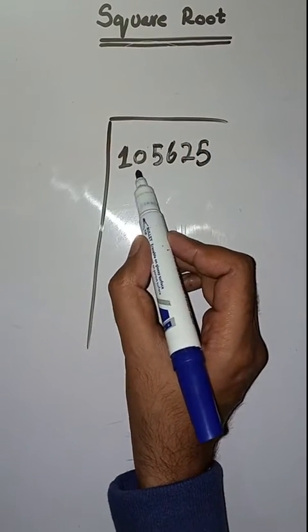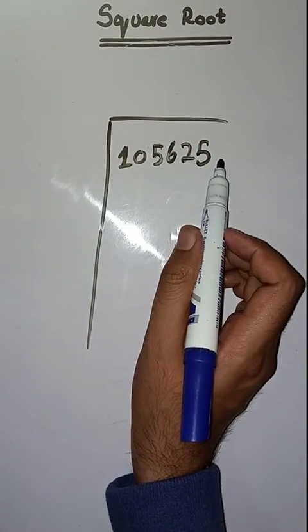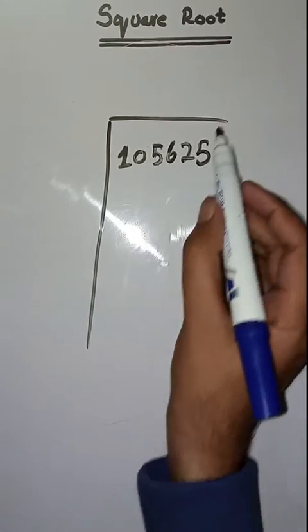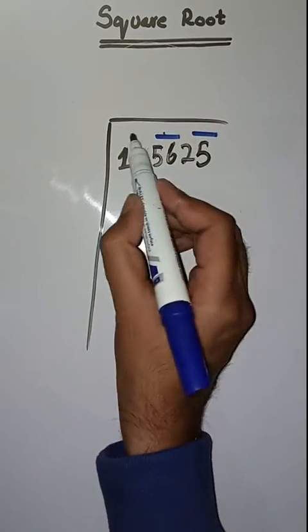We have to find square root of 105625. So first step is we have to make pairs from right to left like this: 25, 56, and 10.